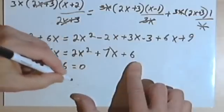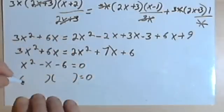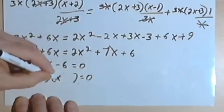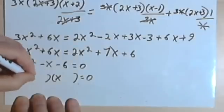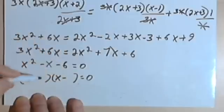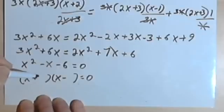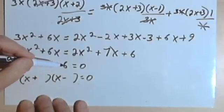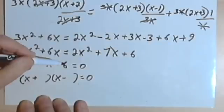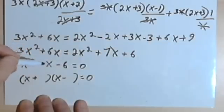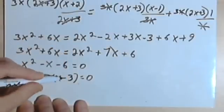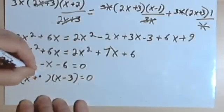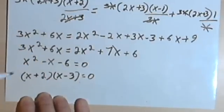I want to factor x squared minus x minus 6. I'll use two binomials each with x. I need a positive and a negative number that multiply to 6 and combine to give negative 1 in the middle. Using 3 and 2, and making the 3 negative since the middle term is negative, I get x plus 2 times x minus 3 equals 0.